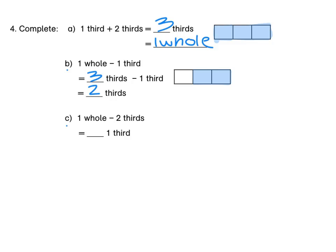For C, 1 whole minus 2 thirds. Now 1 whole — you must immediately think 1 whole is equal to 3 thirds. And 3 thirds minus 2 thirds is equal to 1 third. So the answer is 1 third.